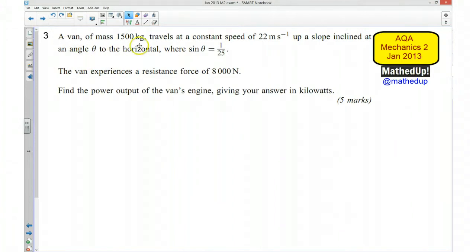A van of mass 1500 kilograms travels at a constant speed of 22 meters per second up a slope inclined at an angle theta to the horizontal, where sine theta equals 1/25th. The van experiences a resistance force of 8000 newtons. We need to find the power output of the van's engine in kilowatts.